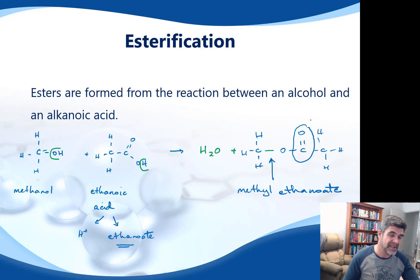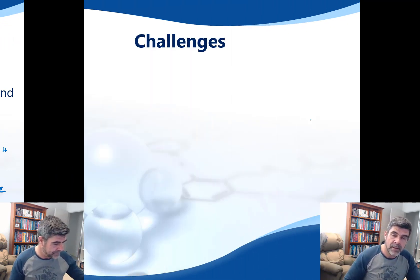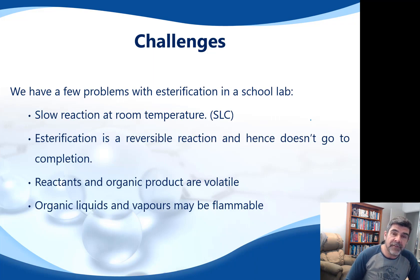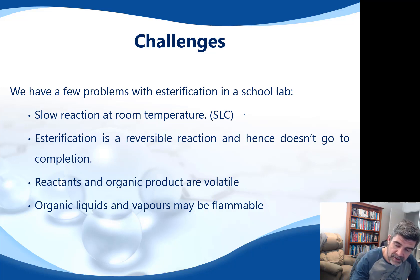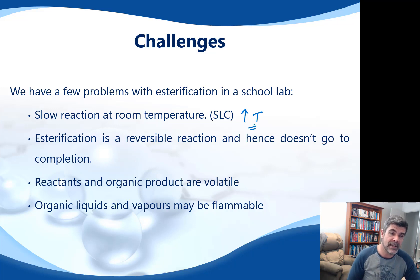This is a nice reaction, but there are a couple of conditions we need to consider when producing an ester in the laboratory. The first challenge is that the reaction is very slow at room temperature. The easiest way to overcome this is to increase the temperature by heating the mixture with a Bunsen burner, a water bath, or a heat mantle.